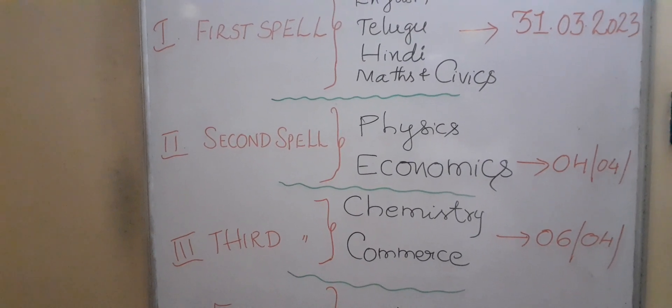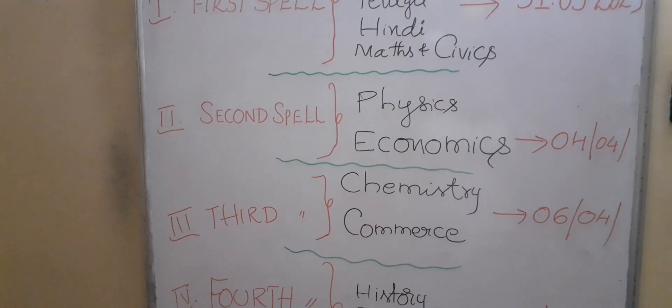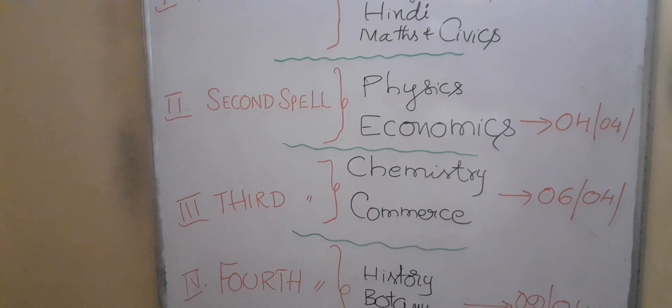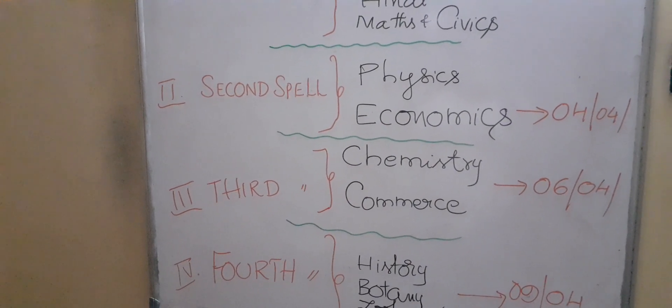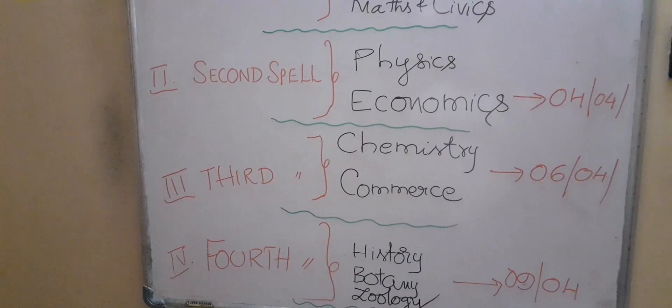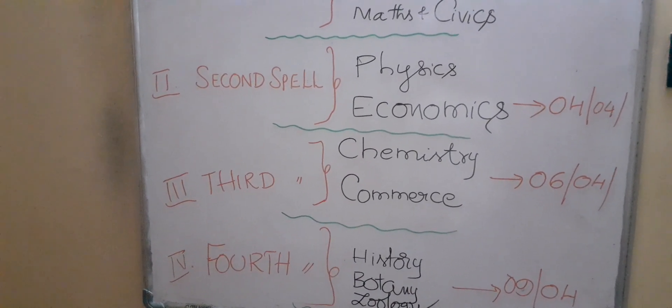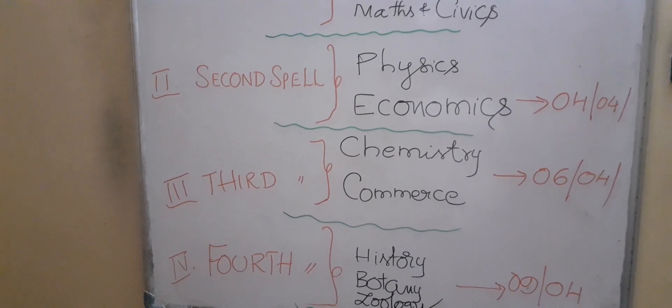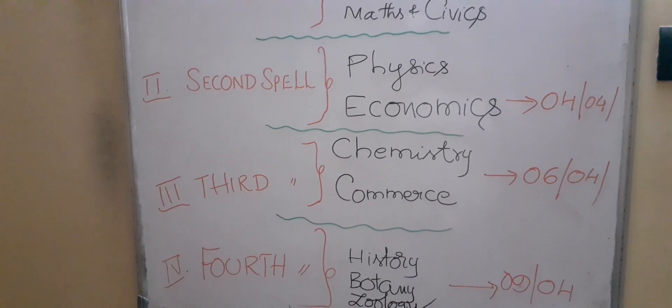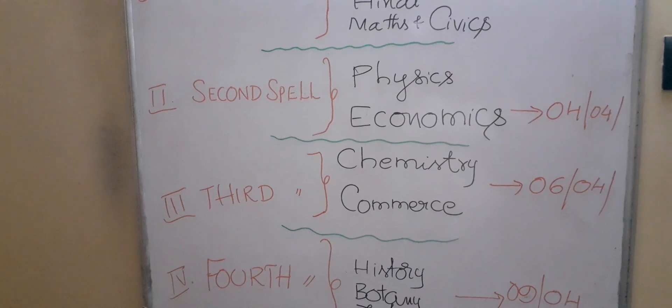The fourth spell, the final one, is for History, Botany, and Zoology. These are the exams conducted at the end of the series. For these subjects, correction is going to start from 9th April onwards.